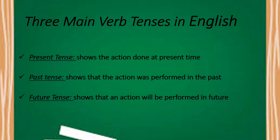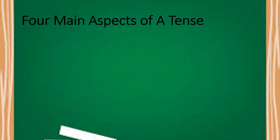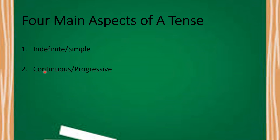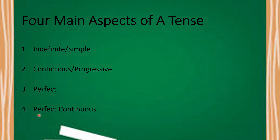Let's move on and talk about the four main aspects of a tense. The first main aspect of a tense is called indefinite or simple. The second one is known as continuous or progressive. The third one is called perfect and the fourth one is known as perfect continuous.